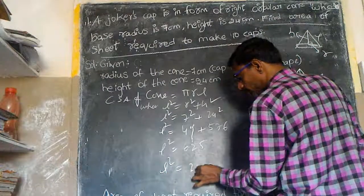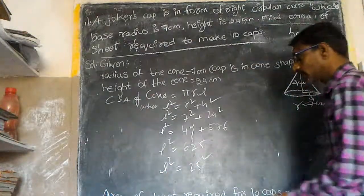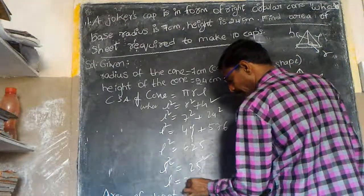So L² is equal to 25² because 25×25 is 625. So L is equal to 25 cm.